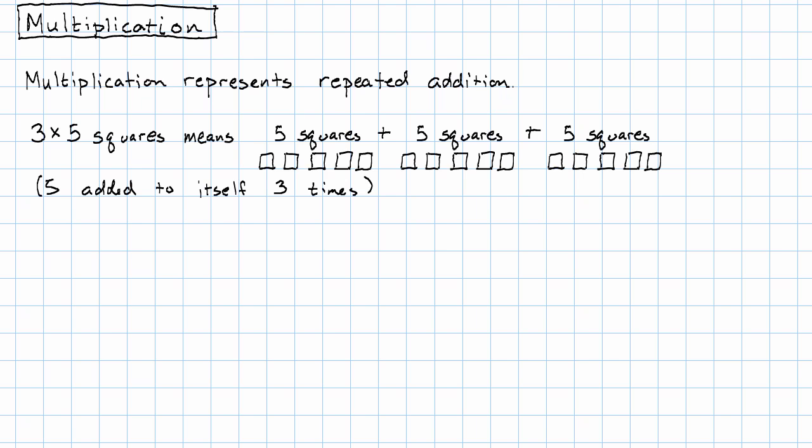So the thing to notice here is that while the number 5 counts squares, the number 3 counts something else. The number 3 counts groups of squares. 1, 2, 3 groups of 5 squares each.